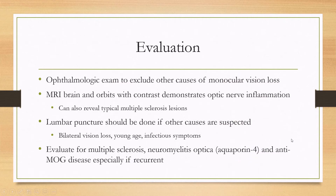For evaluation, an ophthalmologic exam is very important, including fundoscopy, because this can help diagnose other causes of binocular vision loss or optic neuritis. For diagnosis, about 95% of patients will have an abnormality on their optic nerve on MRI brain and orbits with contrast, demonstrating optic nerve inflammation. The MRI brain can also reveal typical multiple sclerosis lesions.